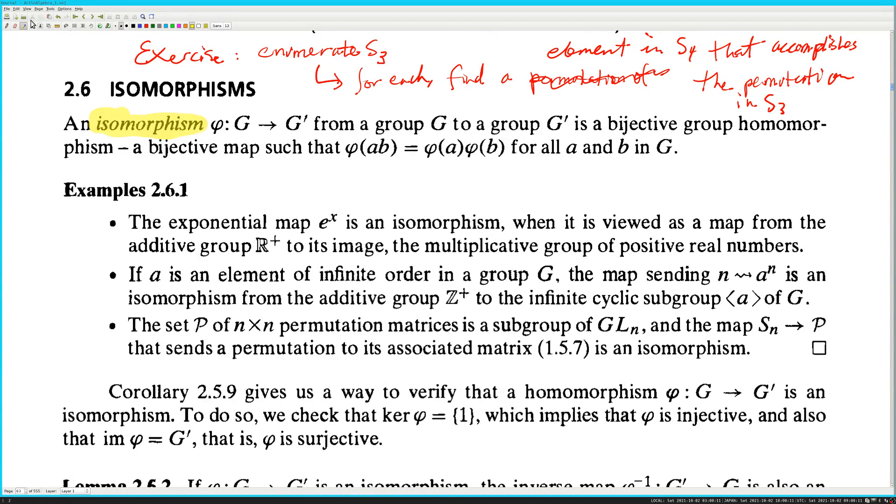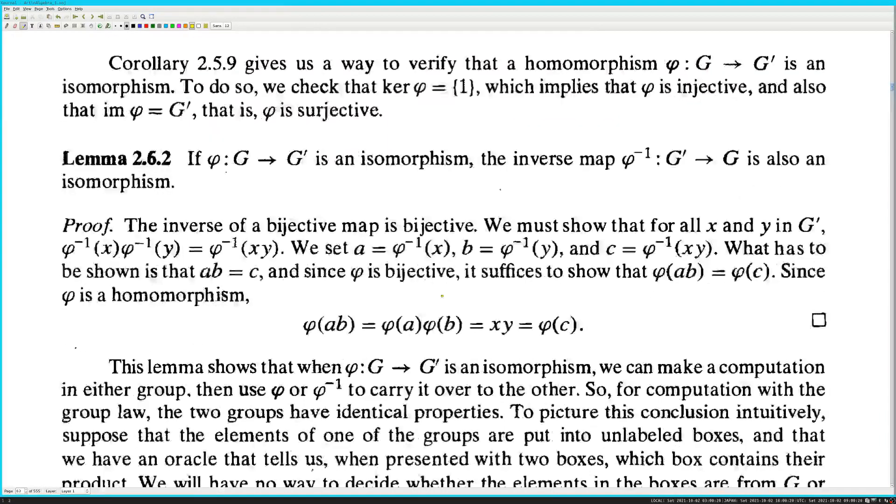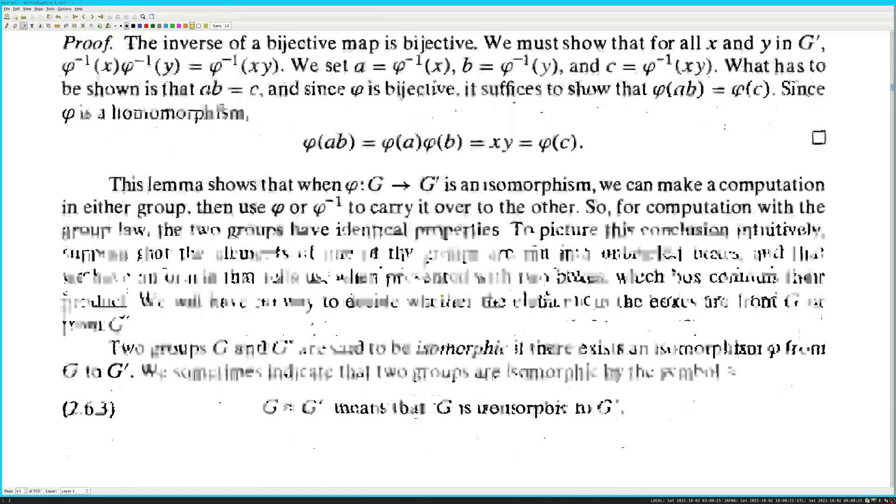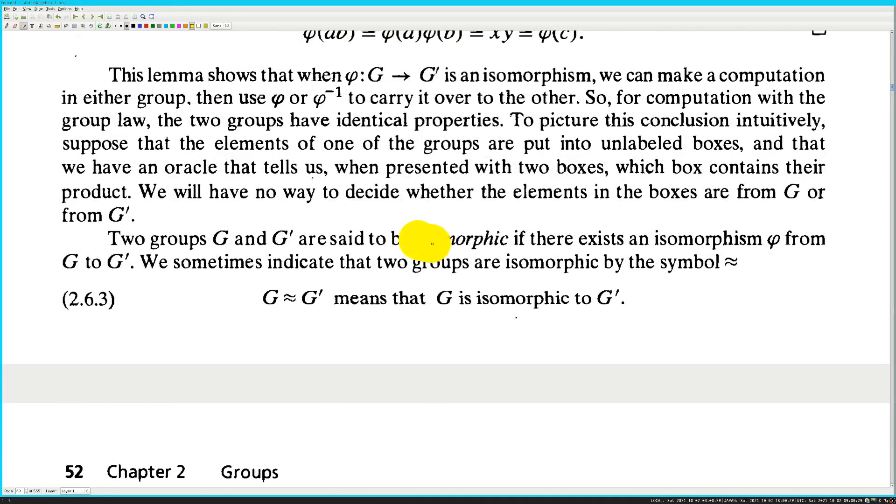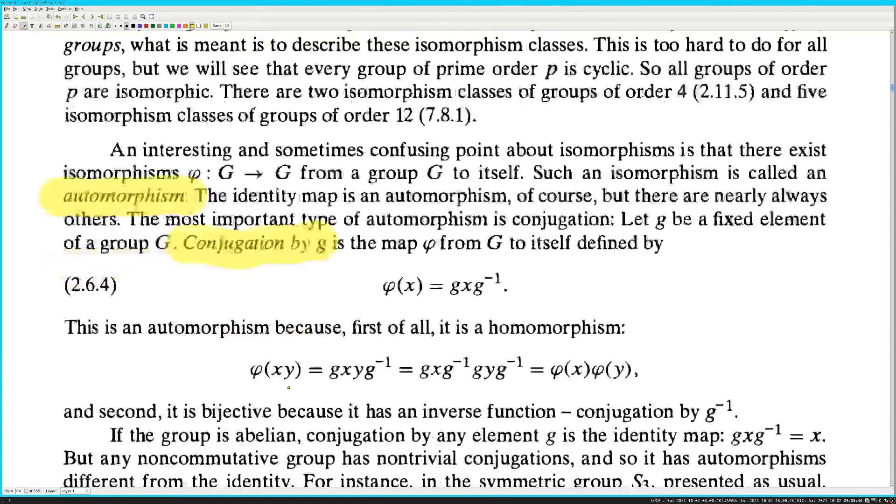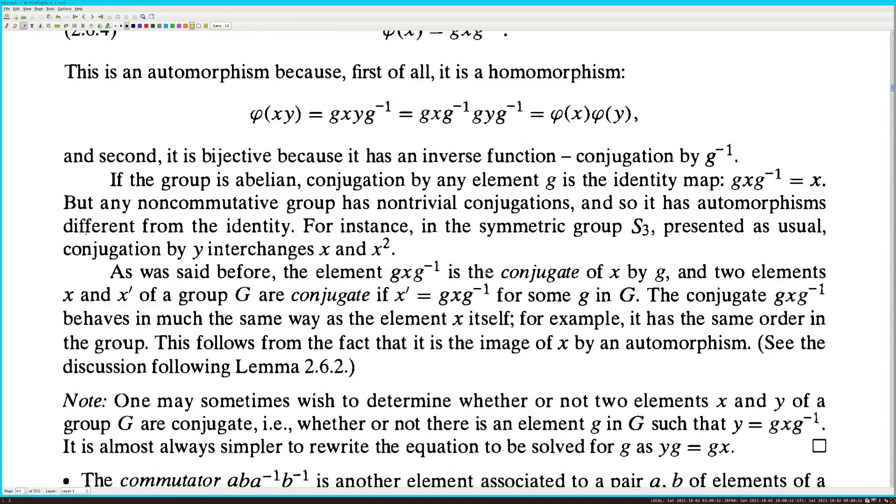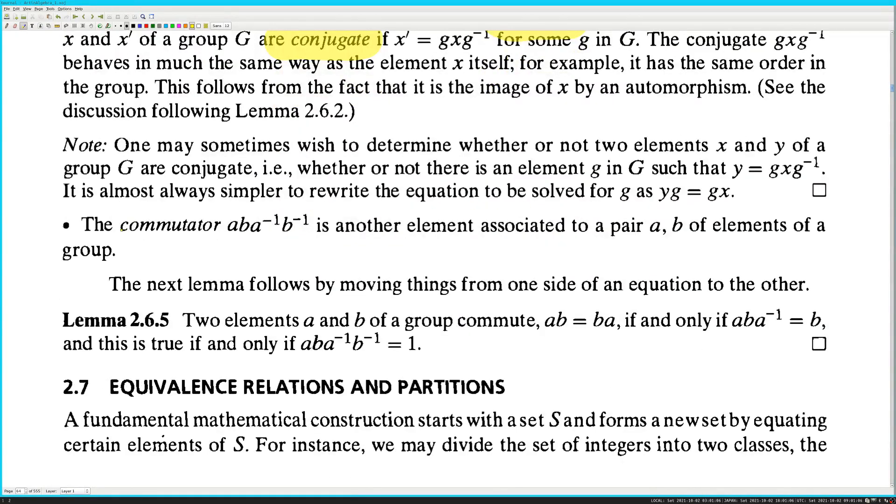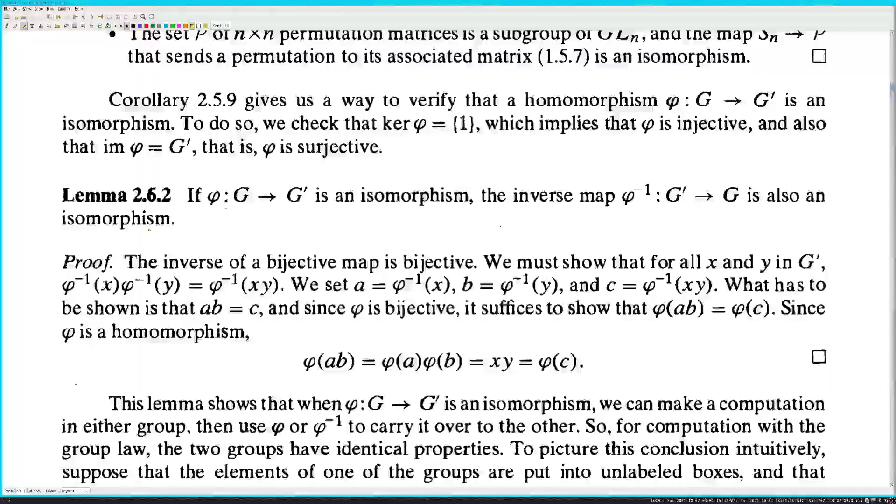Let's go through and highlight all the reserved vocabulary terms. Isomorphism. Let's make it bigger. Just scanning for italicized. Here we have isomorphic. I know what this means. Automorphism. Conjugation by G. Conjugate of... So there's conjugate in two senses here. Commutator.